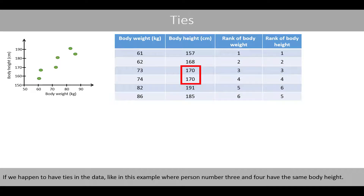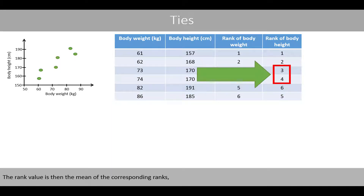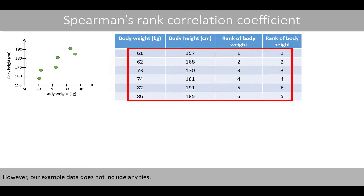If we happen to have ties in the data, like in this example where person number 3 and 4 have the same body height, the rank value is then the mean of the corresponding ranks, which is 3.5 in this example. However, our example data does not include any ties.